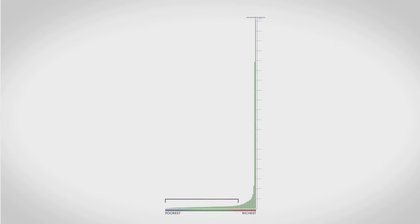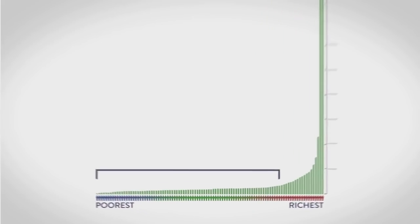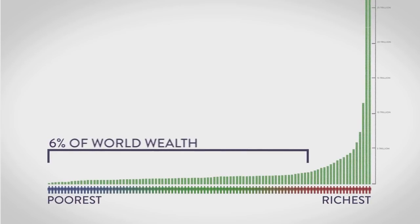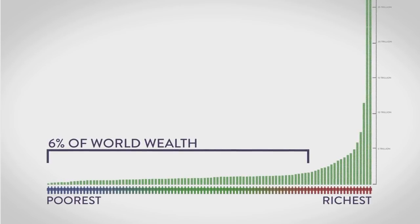The bottom 80%, meanwhile, that's 8 out of every 10 people, have just 6% between them. But even this doesn't really show how extreme things have become.